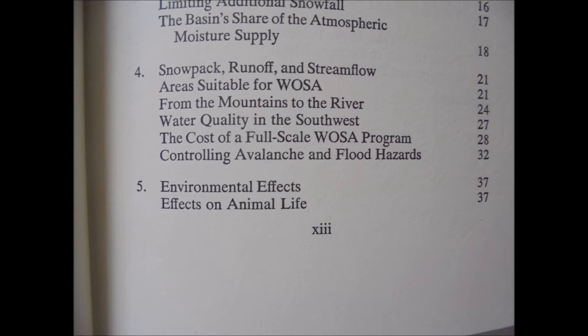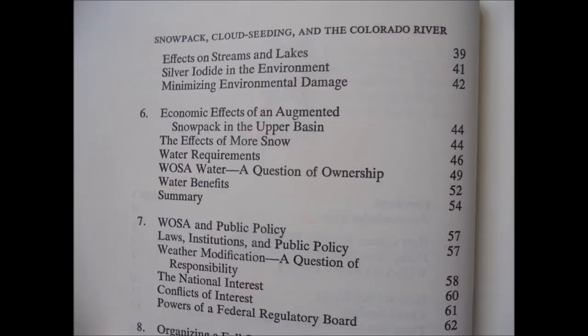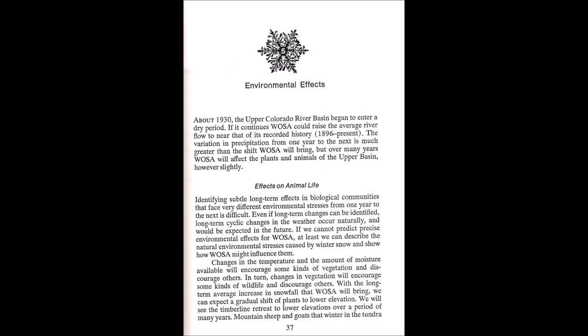We'll jump straight in and have a look at Chapter Five, which is mainly looking at the environmental effects — such as the effects on animal life, streams, lakes, and silver iodide in the environment. We'll take in most of this first piece and then go through a couple of other bits from the rest of the chapter.